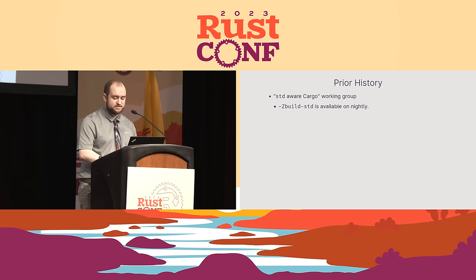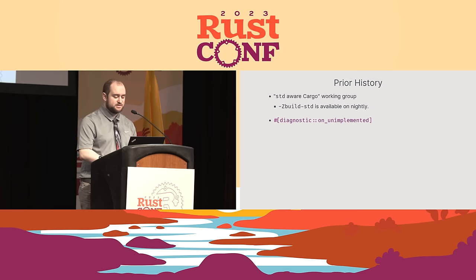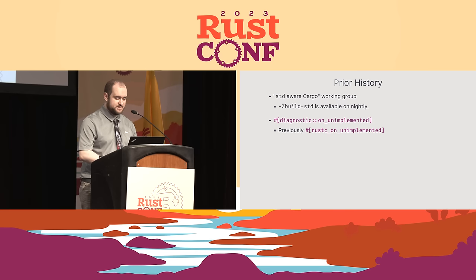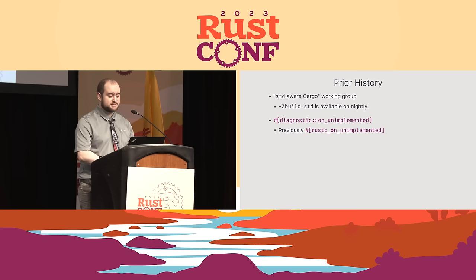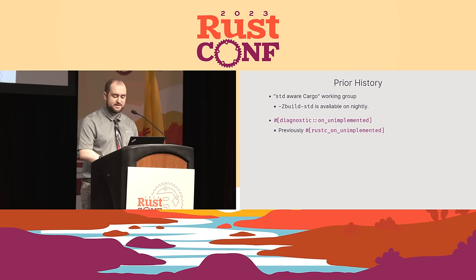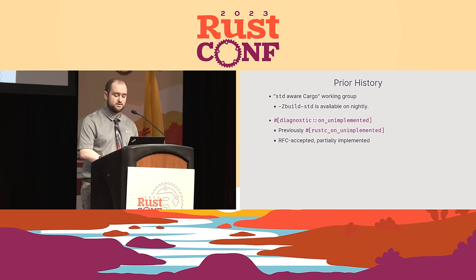In more concrete terms, there is also diagnostic on unimplemented. This has existed inside the standard library for quite some time as rustc_on_unimplemented. It improves error messages when a trait is not implemented but it is expected to be, likely due to a trait bound. Moving this away from a rustc attribute in favor of a diagnostic namespace has been accepted by an RFC, which is partially implemented at the moment.